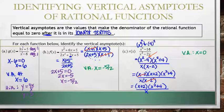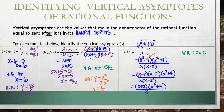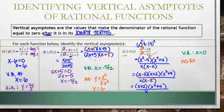For letter B, the degree on top is 2 and the degree on bottom is also 2, so the horizontal asymptote is the leading coefficient on top divided by the leading coefficient on bottom, giving y equals one half. For letter C, the degree on top is 4 and the degree on bottom is 2, so the degree on top is greater, meaning there is no horizontal asymptote.